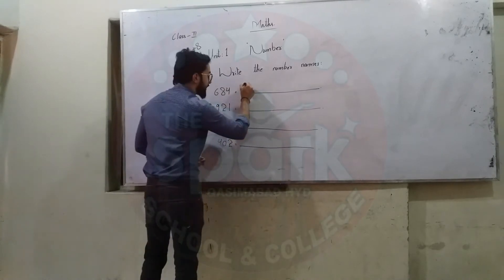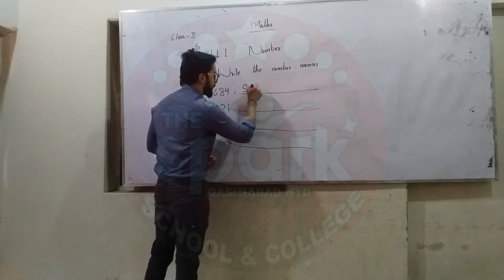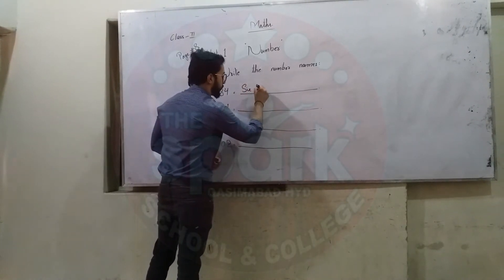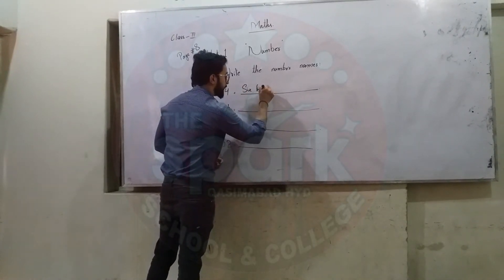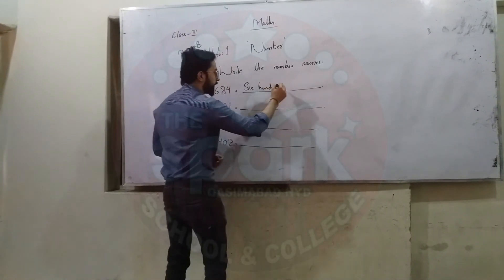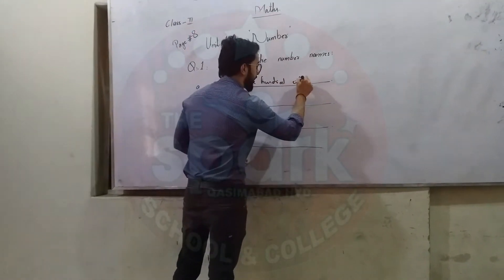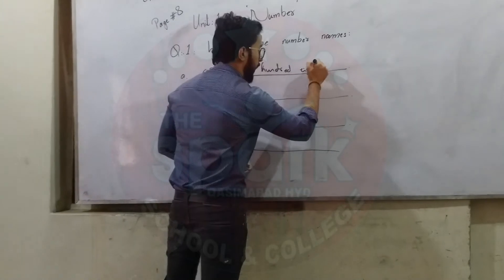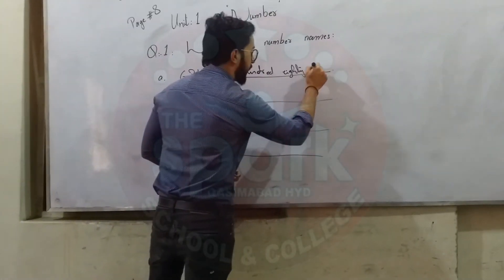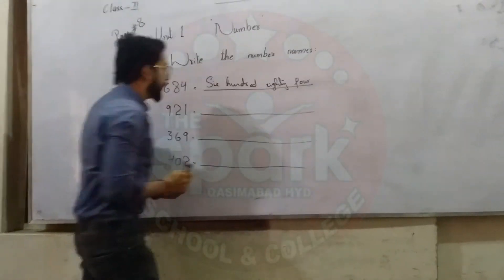684 — S, I, X: Six. H, U, N, D, R, E, D: Hundred. E, I, G, H, T, Y: Eighty. F, O, U, R: Four. Here we write 684 as Six Hundred Eighty Four.